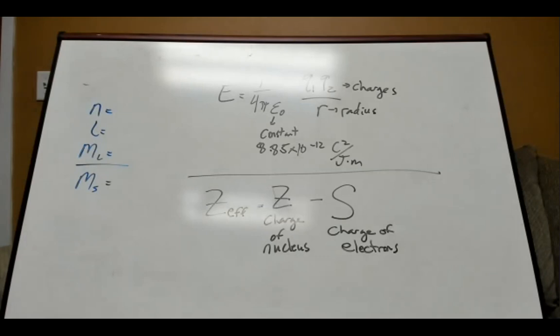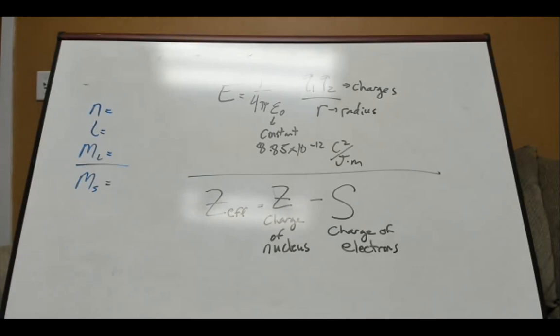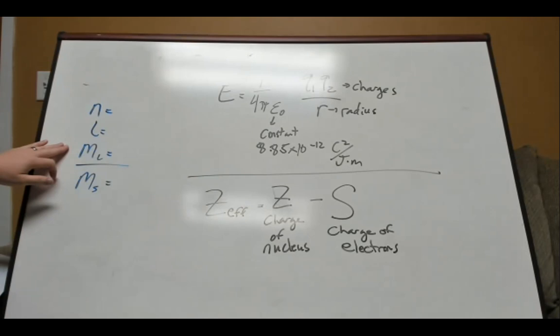On the board we have some numbers — the quantum numbers. Don't worry about the equations in the middle; we'll get there in the next couple of slides. Remember the quantum numbers: we have N, the principal quantum number, which describes the energy and size of the orbital.